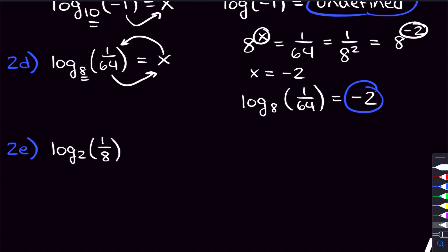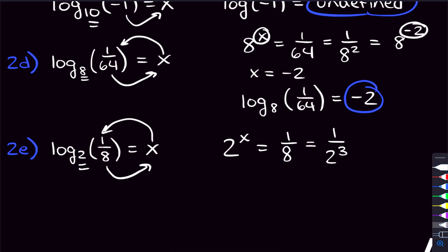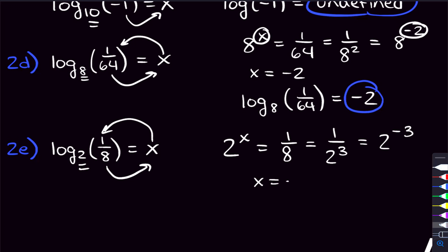What about log base 2 of 1/8? Same thing: set it equal to x, make the 2 bigger, x becomes the power, and 1/8 goes to the other side. We're taking 2 to some power — you notice 8 is 2 cubed. We want 2³ in the numerator, so we make the exponent negative. x equals negative 3. Log base 2 of 1/8 equals negative 3.